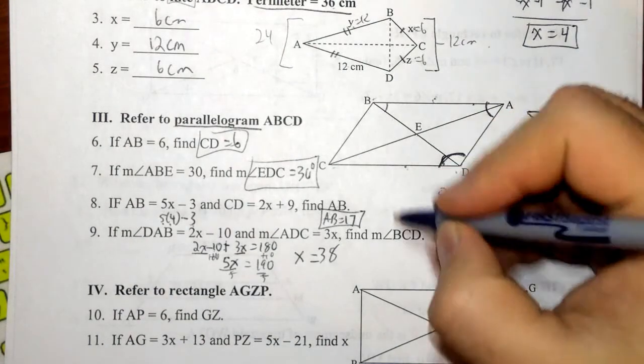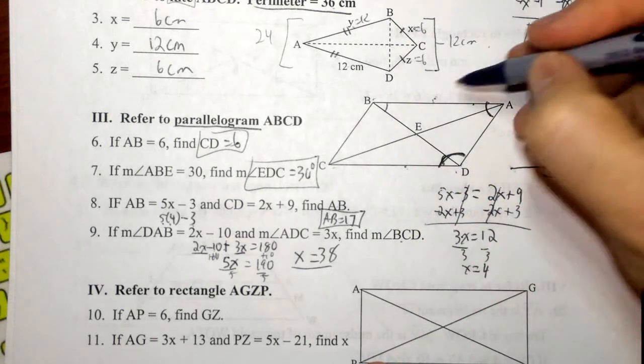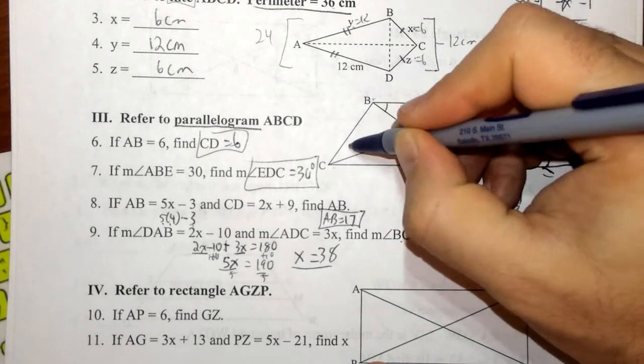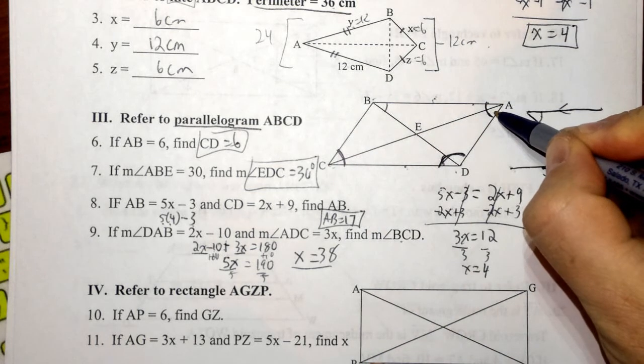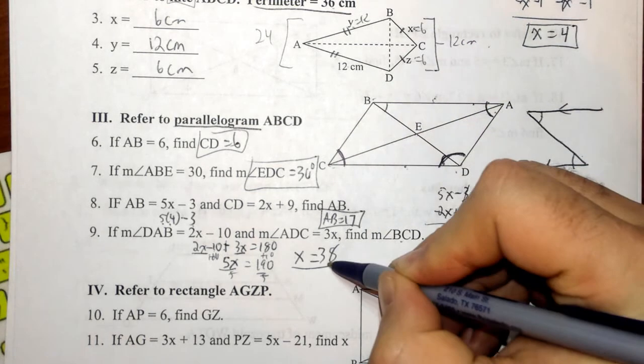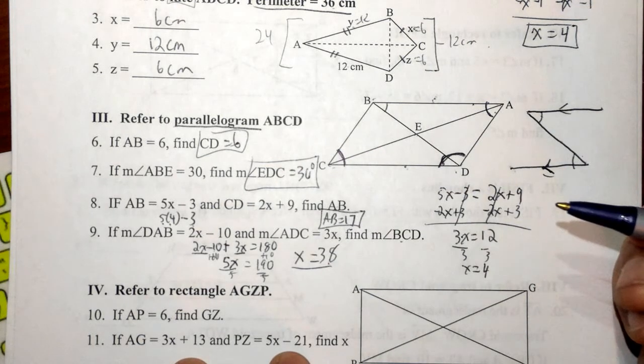Now, I'm not done. I have x. I need to find the measure of BCD. BCD is this acute angle, which is opposite of BAD. So if I plug 38 into the measure of angle DAB, then I've got my answer.